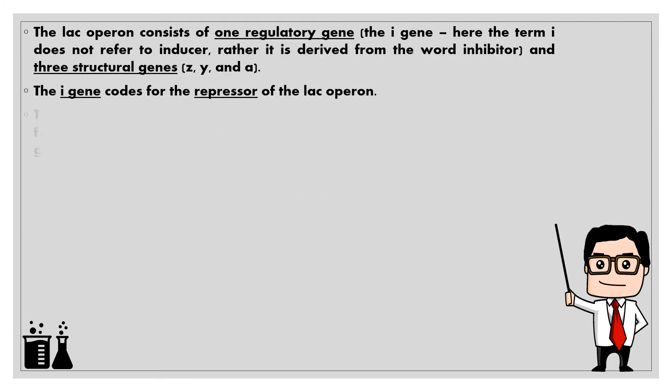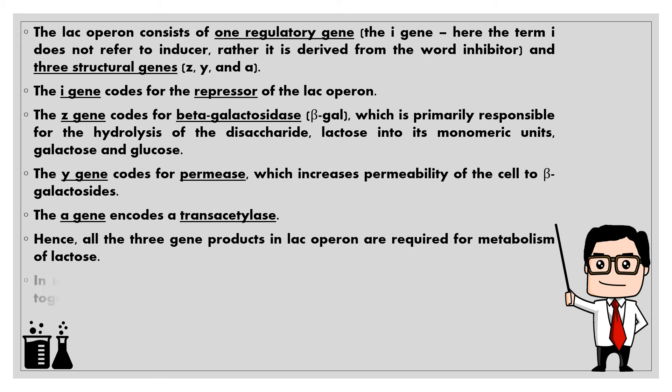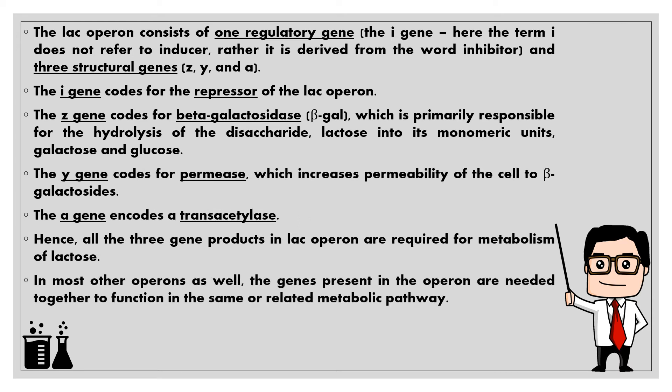The lac operon consists of one regulatory gene, the I gene. Here the term 'I' does not refer to inducer; rather it is derived from the word 'inhibitor.' The operon also contains three structural genes: Z, Y, and A.